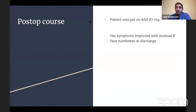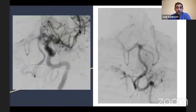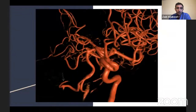The patient was put on aspirin 81mg, and her symptoms improved post-operatively with residual facial numbness at discharge. At three-month follow-up, her symptoms completely resolved. Angiogram showed persistent occlusion of the right vertebral artery. Interestingly, the PICA aneurysm on the right side disappeared — most likely due to flow reversal phenomena. You can see on the right side of the slide where the aneurysm was at the PICA takeoff — and then on the left side, it's gone. The 3D shows where the aneurysm used to be — now it has disappeared.